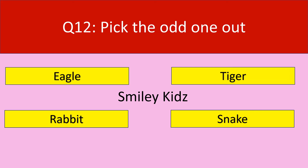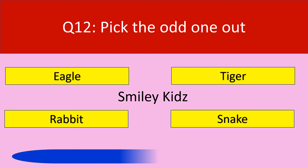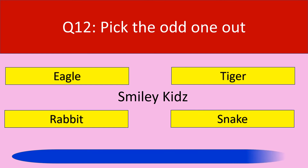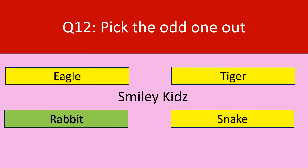Question number 12. Pick the odd one out: eagle, tiger, rabbit, and snake. Your time starts now. The correct answer is rabbit. Rabbit is a herbivore. Eagle, tiger, and snake are carnivores.